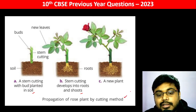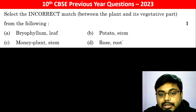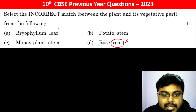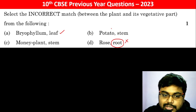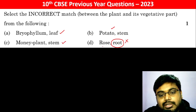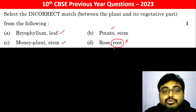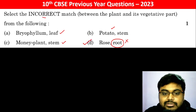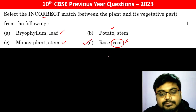The key point is that rose has 'root' written next to it in the options, which is incorrect. Bryophyllum propagates by leaf, potato by stem, money plant also by stem. But rose does not develop from the root. Therefore, the incorrect match is option D.